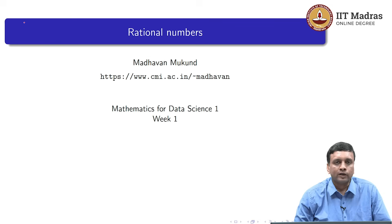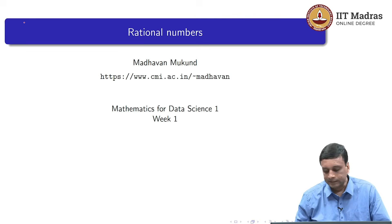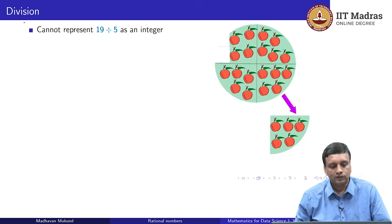In our first lecture on numbers, we looked at natural numbers and integers. Now let us see what happens when we try to divide. Let us look at the rational numbers.